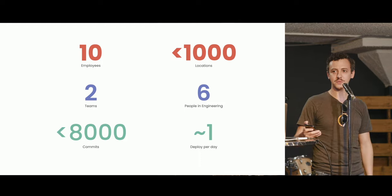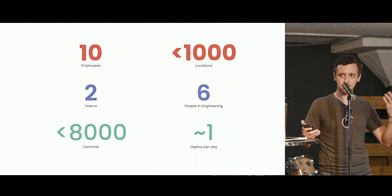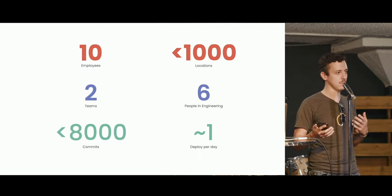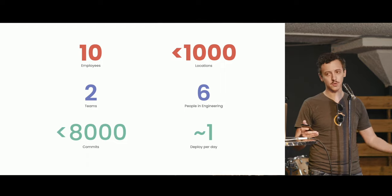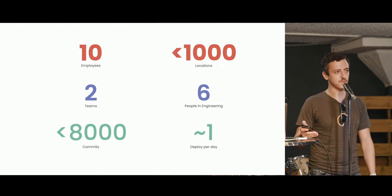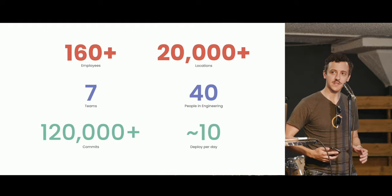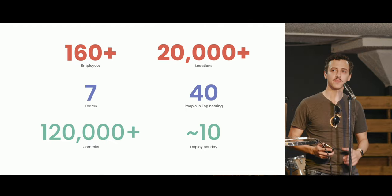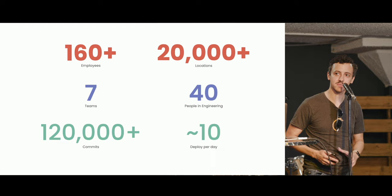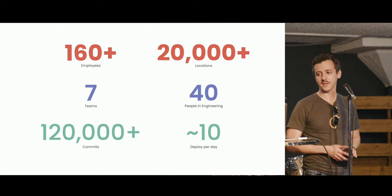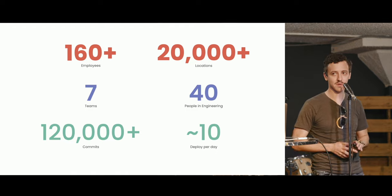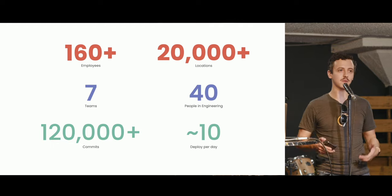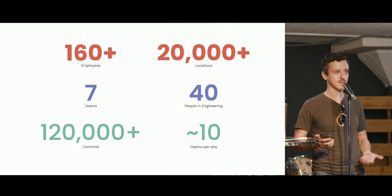When I joined Seven Shifts over five years ago we were ten people total — the entire company fit in one room, we did one stand-up as a full company, communication was easy, and we had two tiny teams: one web team and one mobile team, each about three people. Fast forward five years and the company has grown quite a bit: 16x the number of employees, 20x the number of customer locations, a lot more teams, a bigger codebase, and we deploy up to 15 times a day.